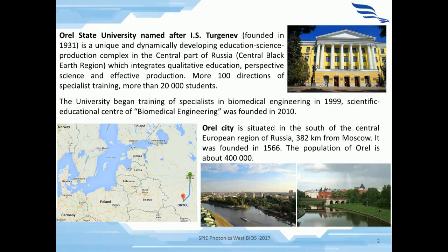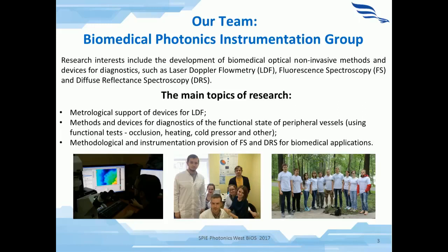At the beginning, I offer a little bit of information about me and our research group. I'm a PhD student and researcher at the Ural State University. Ural City is situated in the south of the central European region of Russia, just about 380 kilometers from Moscow. Our team is interested in the development of biomedical optical non-invasive methods and devices for diagnostics, such as laser Doppler flowmetry, fluorescent spectroscopy, and diffuse reflectance spectroscopy. This talk is devoted to the possibilities of the laser Doppler flowmetry method for the joint study of micro-hema and lymph circulation in human skin.